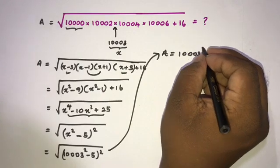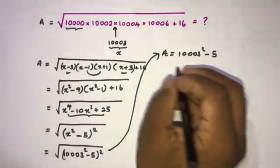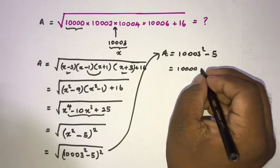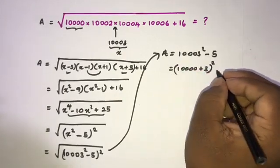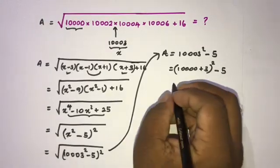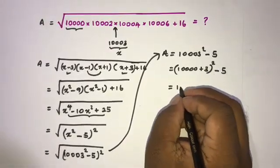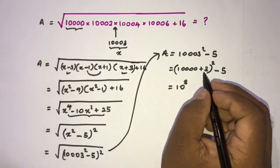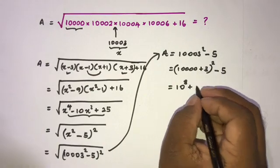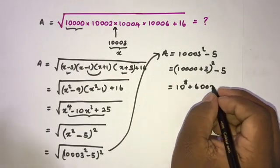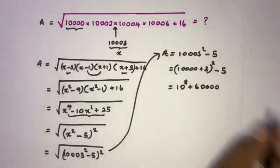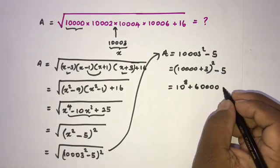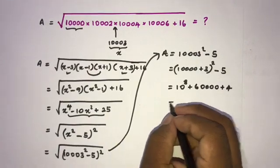Now we compute 10003² minus 5. We know 10003² equals 10 to the 8th power plus 6 times 10 to the 4th power plus 9, which is 100,000,000 plus 60,000 plus 9. Subtracting 5 gives plus 4, so the result is 100,060,004.